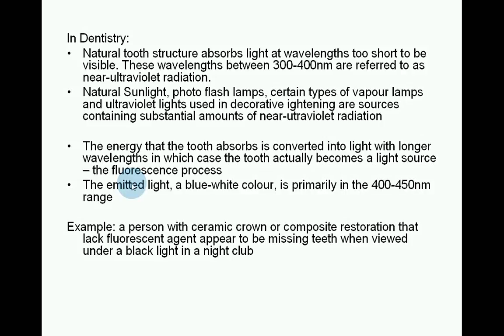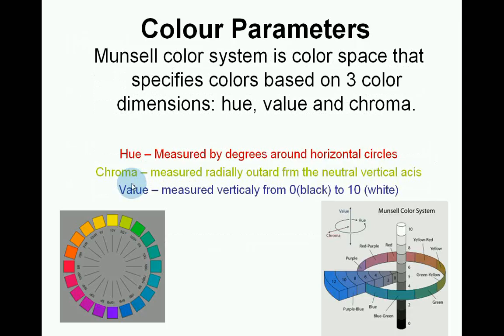For example, a person with a ceramic crown or composite restoration that lacks a fluorescent agent will appear to be missing teeth when viewed under a black light in a nightclub. Munsell's colour system is a colour space that specifies colours based on three colour dimensions: hue, value and chroma.